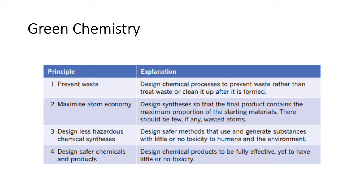Number two: maximize the atom economy. The idea is that you should be trying to use up all of your reactant atoms. Ideally that means a high yield, but it also means that if you've got a single waste product, it uses most of the atoms. For example, if you're using chloromethane and you only want the chlorine from it, you don't want the three hydrogens and the carbon — that's not very useful.